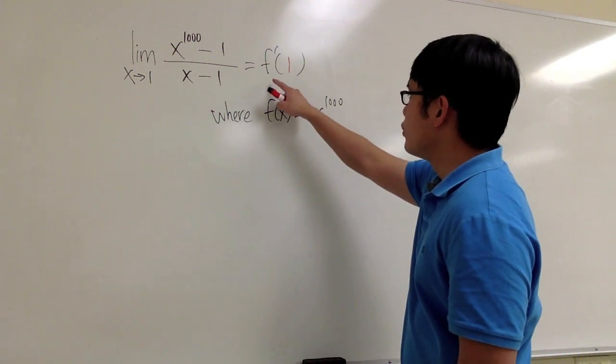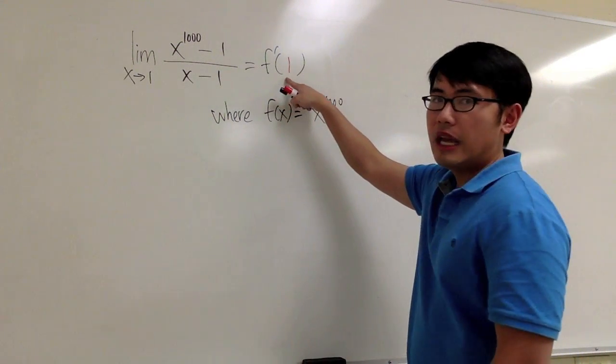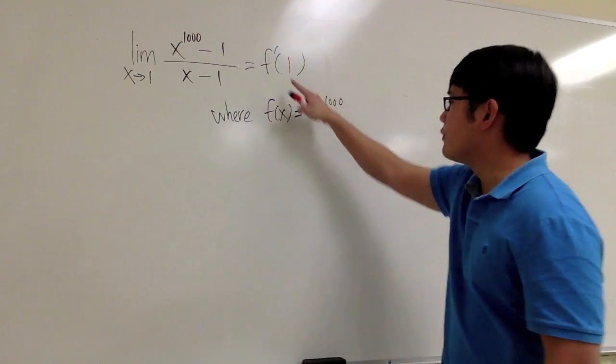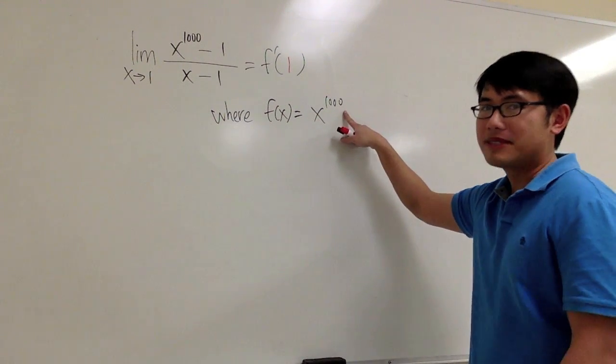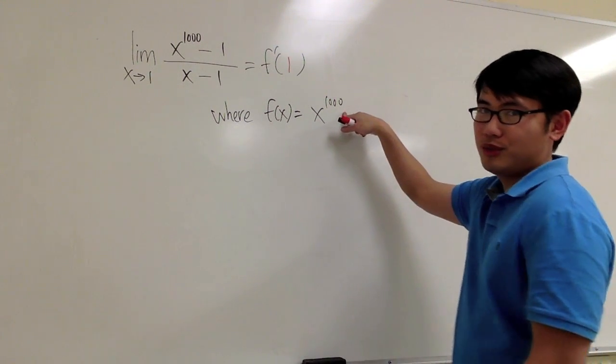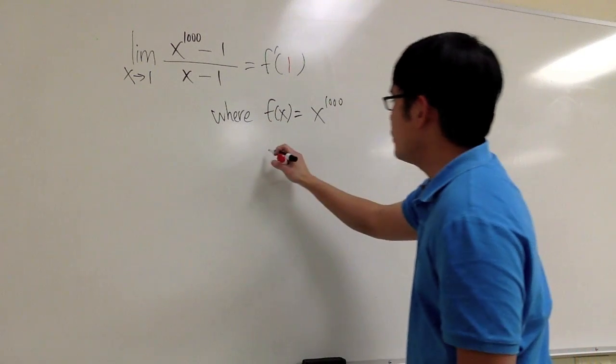If today I tell you to find me the derivative of some function at x equals 1, and you know the function is x to the 1000 power, perhaps the way that you would like to do it is just use the power rule. So I will do that.